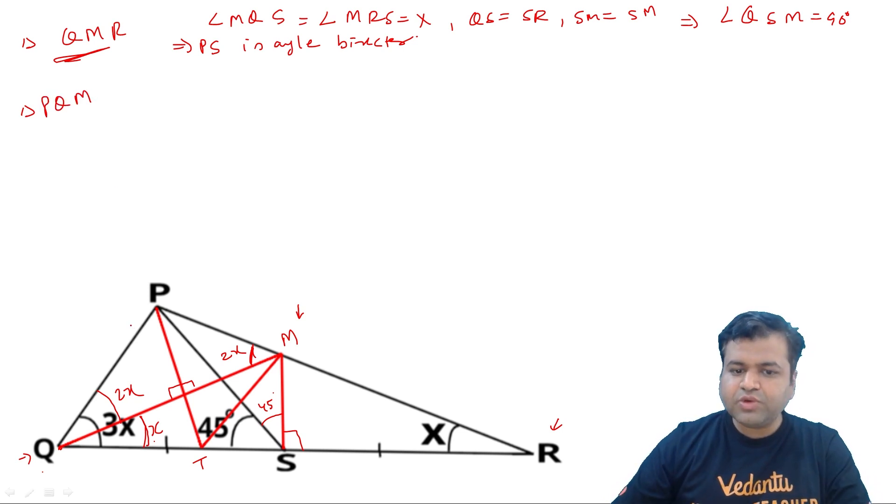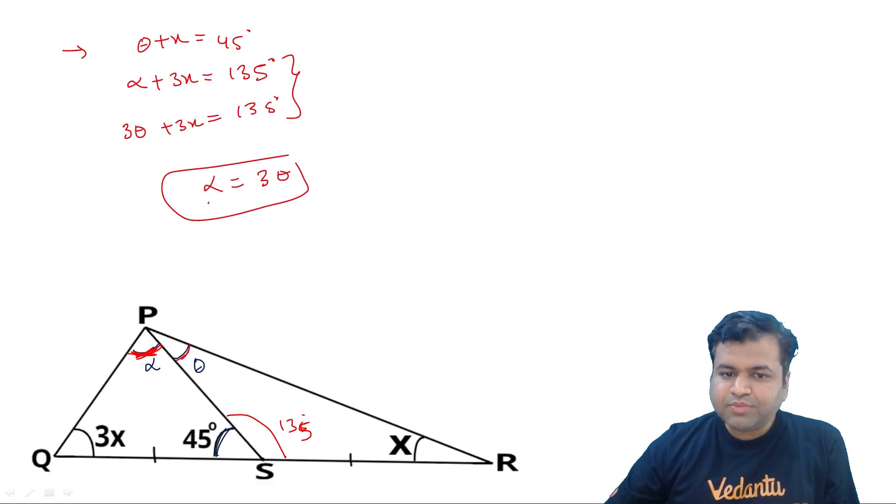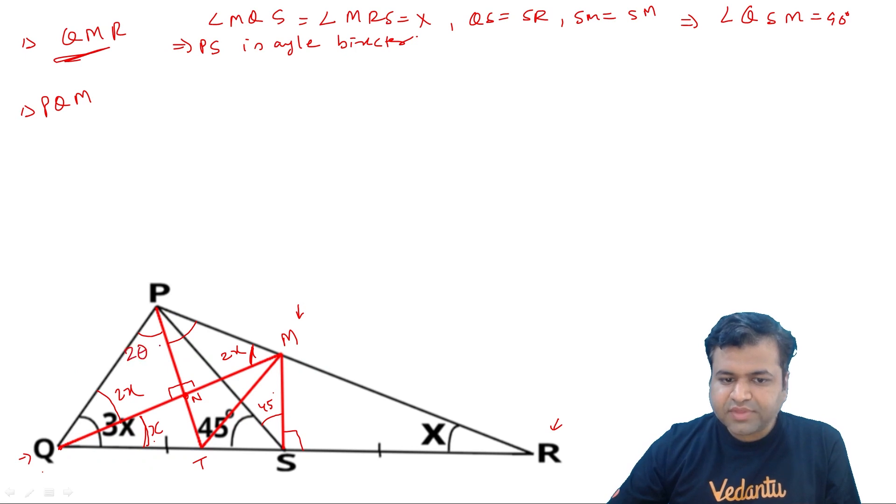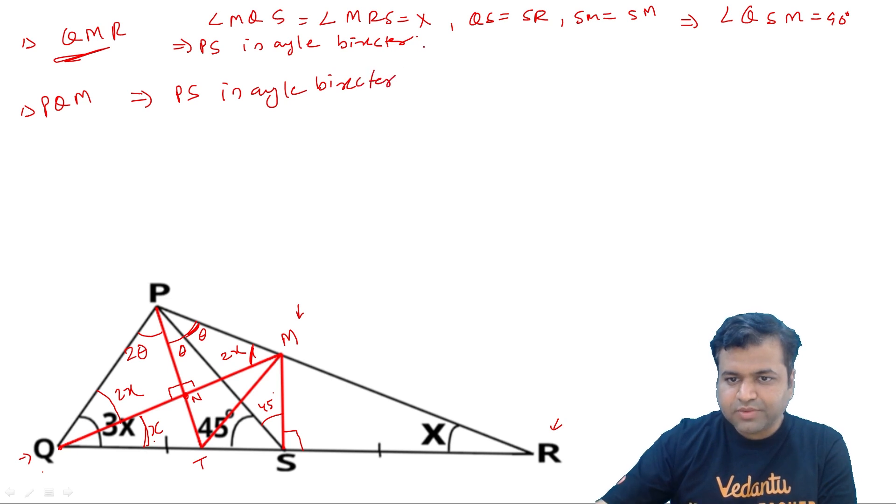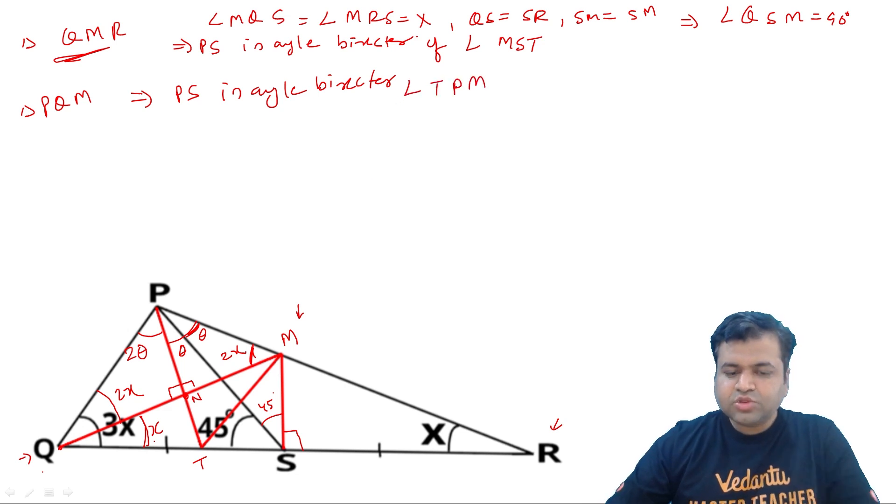Yahaan se kya samajh mein aa raha hai? Yeh jo PS hai, PS is angle bisector. Phir maine kya kiya, P point se QM per perpendicular drop kiya. Let's say yeh point mila hamein T point. Ab dhyan se samajhna. Phir maine kya, PQM basically ek isosceles triangle hai jis mein maine P point se perpendicular drop kiya hai. Let's say this point ko bhi naam de dete hain. Let's say this point is N. To practically, ab yeh dono PNQ or PNM, dono congruent triangle banengi. Hence yeh wala angle, is wala angle ke equal hoga. Ab mujhe ek cheez batao. Thodi der pehle maine bataya, yeh pura angle kitna tha, alpha that is equal to 3 theta. Pura angle 4 theta tha, to uska aadha kitna hoga 2 theta. Yeh wala angle humara, itna sa angle kitna tha, yeh tha theta, to yeh wala angle bhi ho jayega theta. To iska kya matlab ho, PS jo hai, PS is angle bisector phir se of angle MST. Or yahaan par hai angle TPM. To angle TPM ka bhi angle bisector hai, angle PS. Iska angle TSM ka bhi hai.